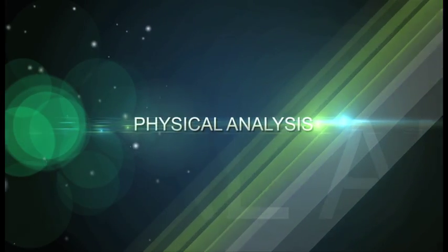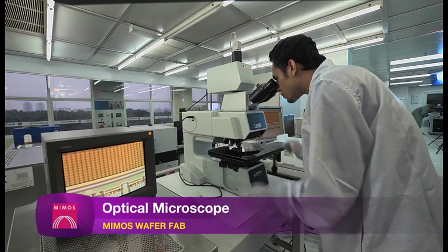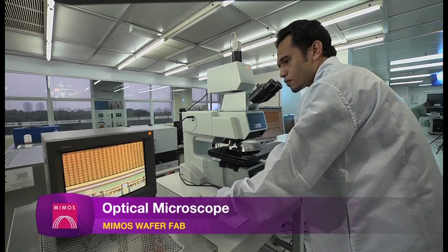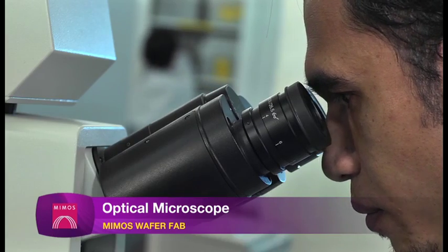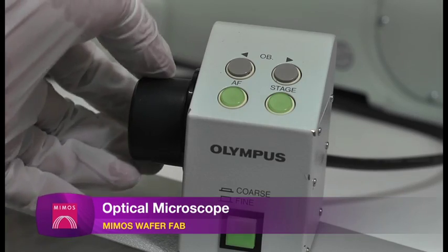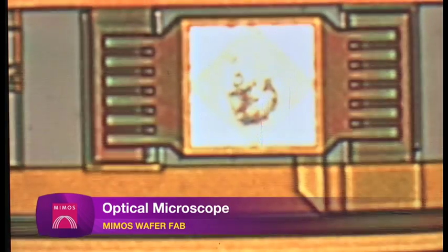Once failure has been electrically identified and localized, physical analysis is required to determine the root cause. Optical microscope is the most basic inspection tool to reveal physical defect. It is normally used for initial observations in order to quickly identify the failure mechanism.